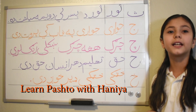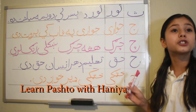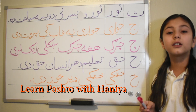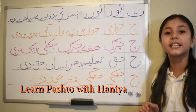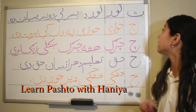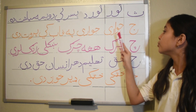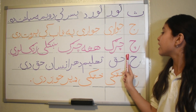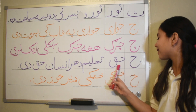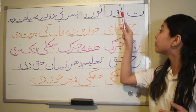Hi everyone, this is Hania and this is lesson two of our Pashto alphabets. Last time we finished or stopped at T, and now we're going to start at C. So let's get started — we're going to use all these words in sentences.